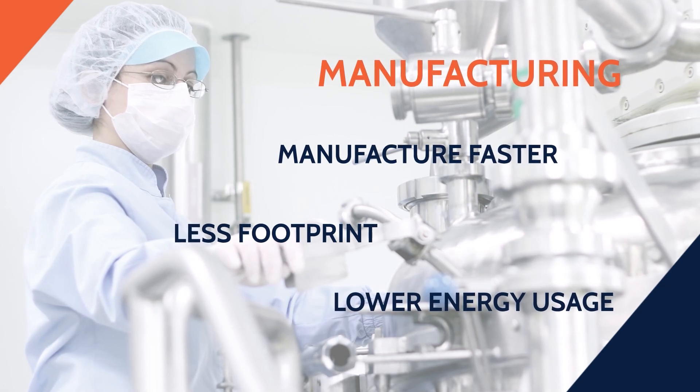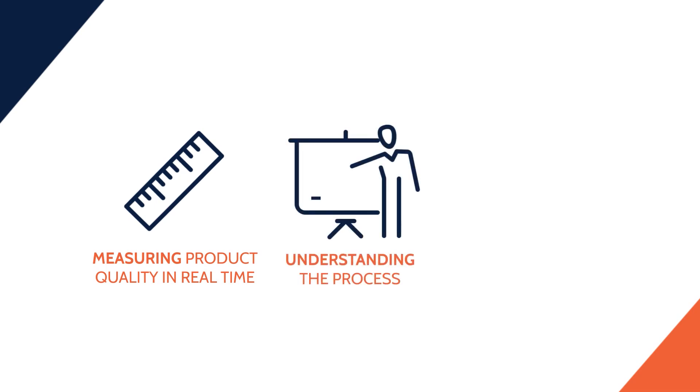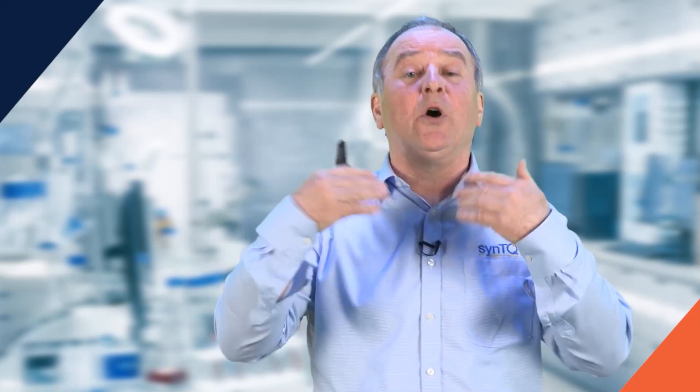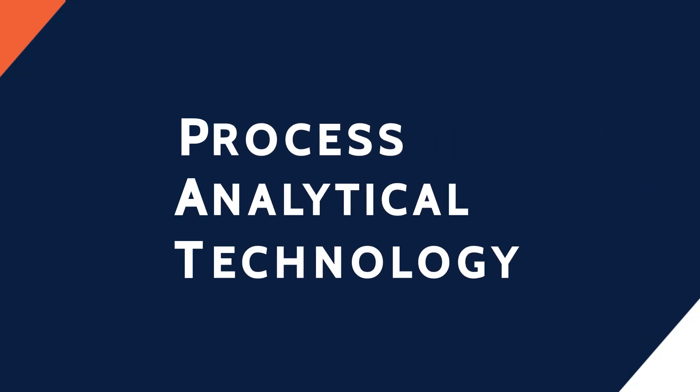By moving across to PAT, we are moving across to a quality by design process. We are measuring product quality in real time, understanding the process, and then controlling the process based on product quality. You might say you're already measuring process variables, but the key thing is you're not measuring product quality. Yes, you might be measuring pH or CO2 or other variables, but in the main you're not measuring all the main quality attributes of your product.